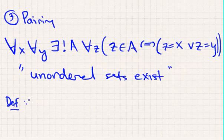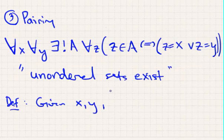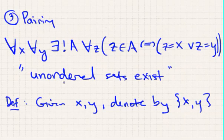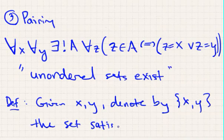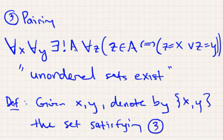So given two sets, we're able to get a new set by taking the set of both of them. So definition, this is more notation, but given sets X and Y, denote by curly brackets X comma Y, curly bracket, the set satisfying 3. This definition is given because by our intuition, we want this set to exist, so that's why this is stated as an axiom.